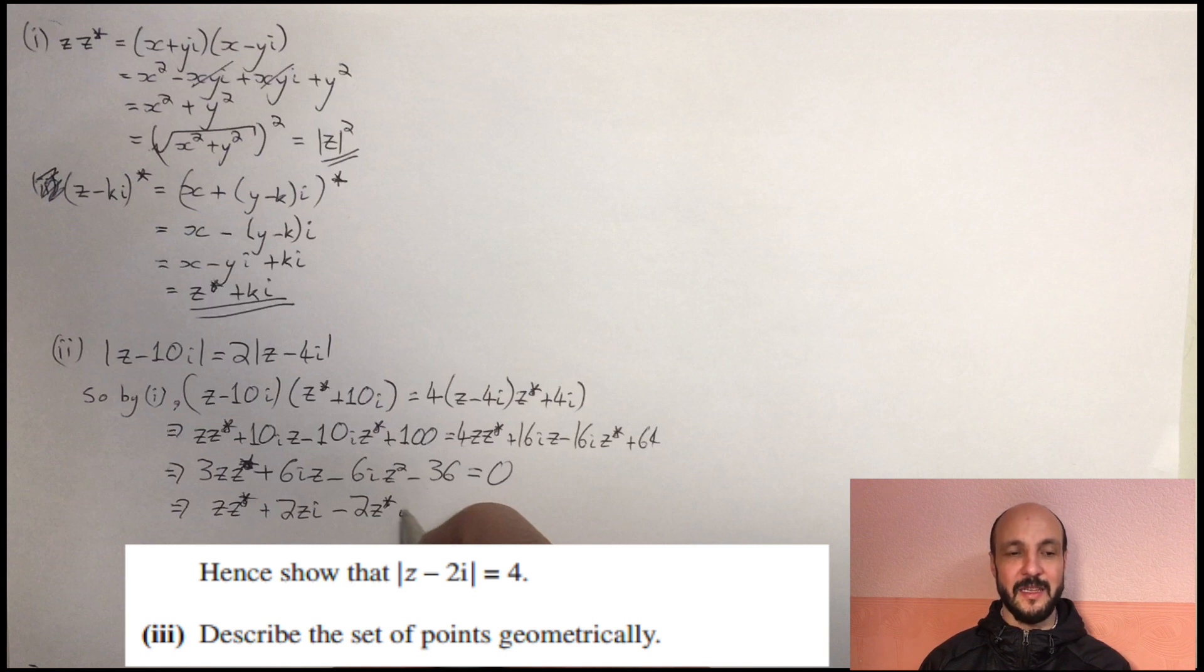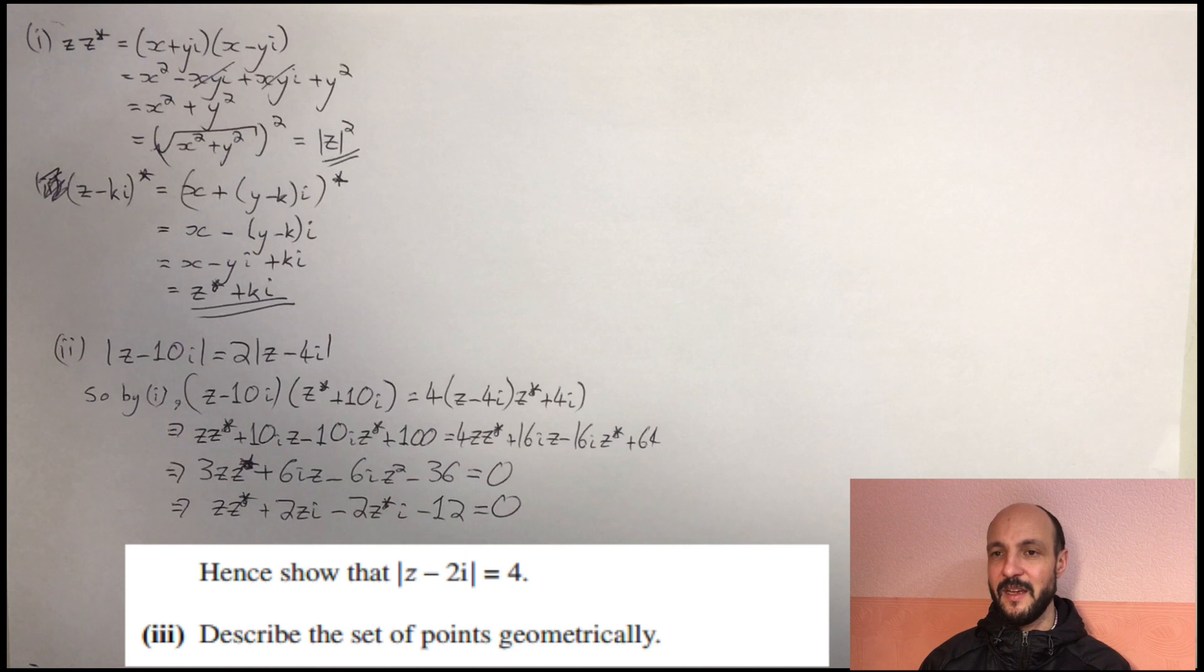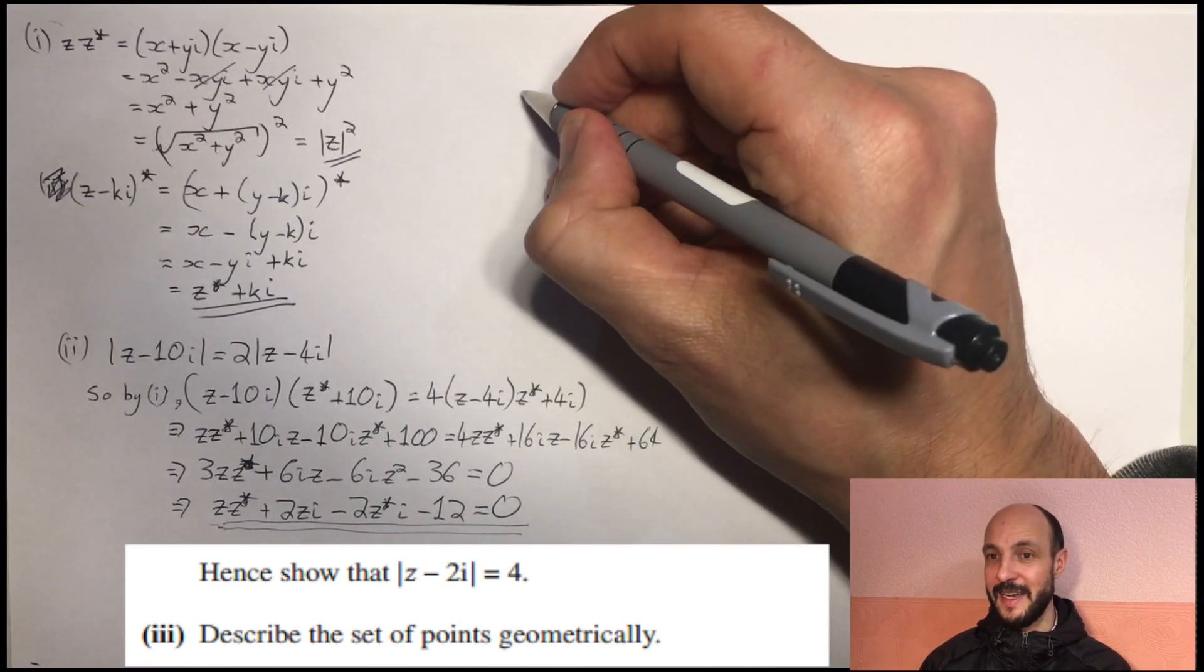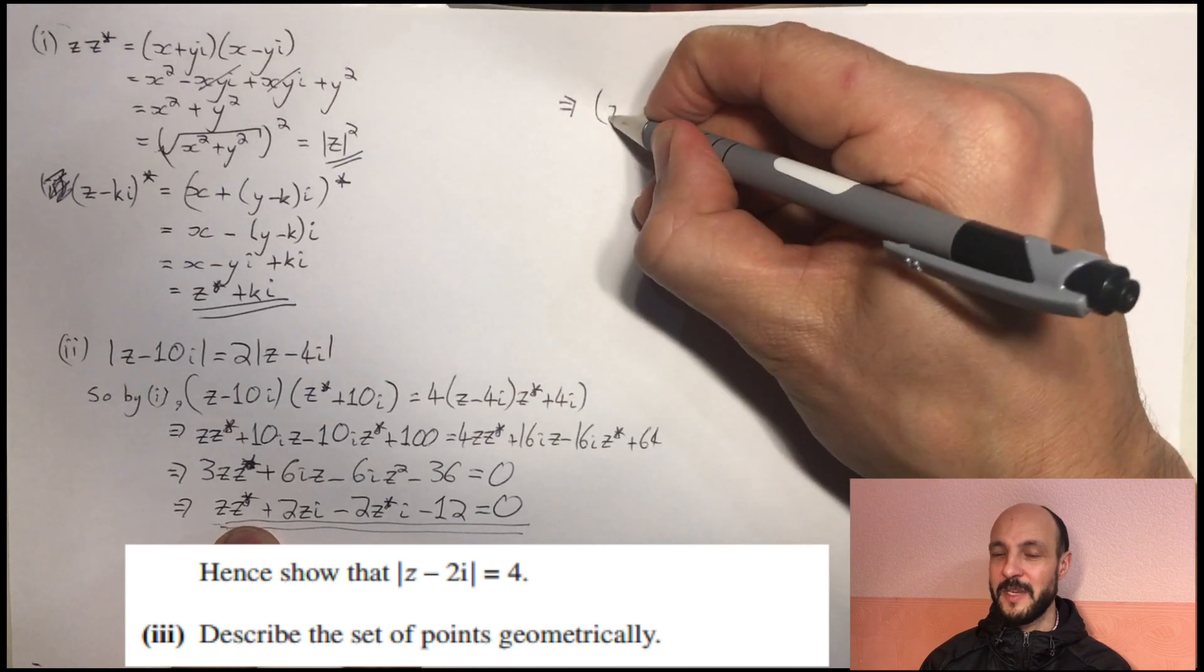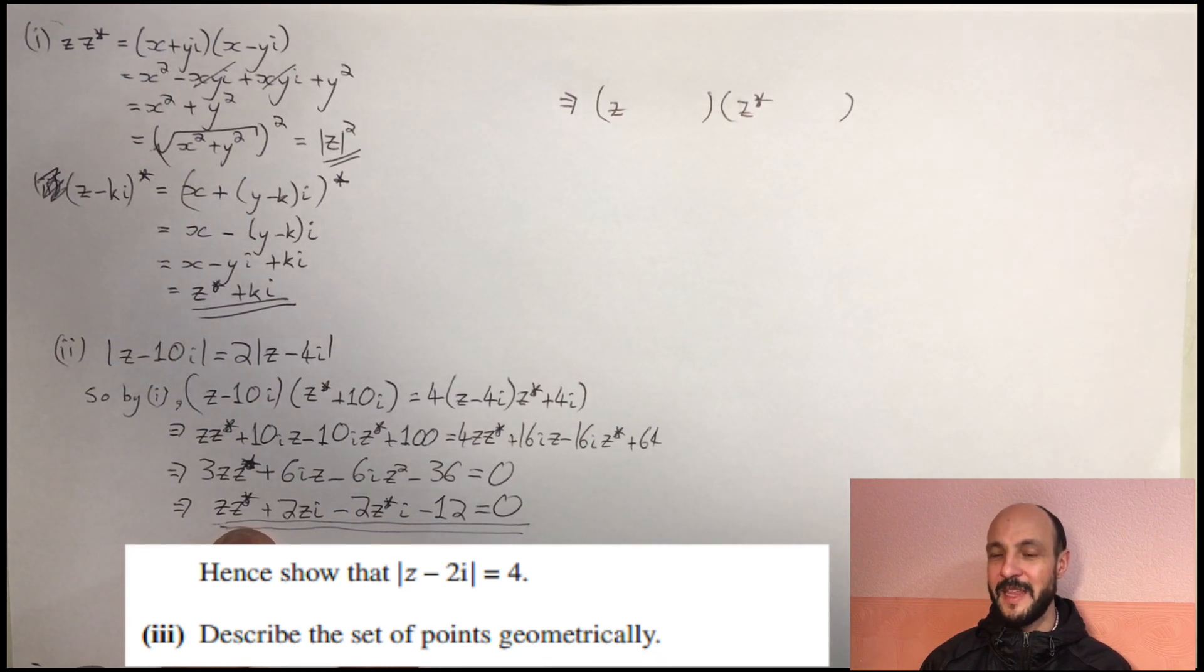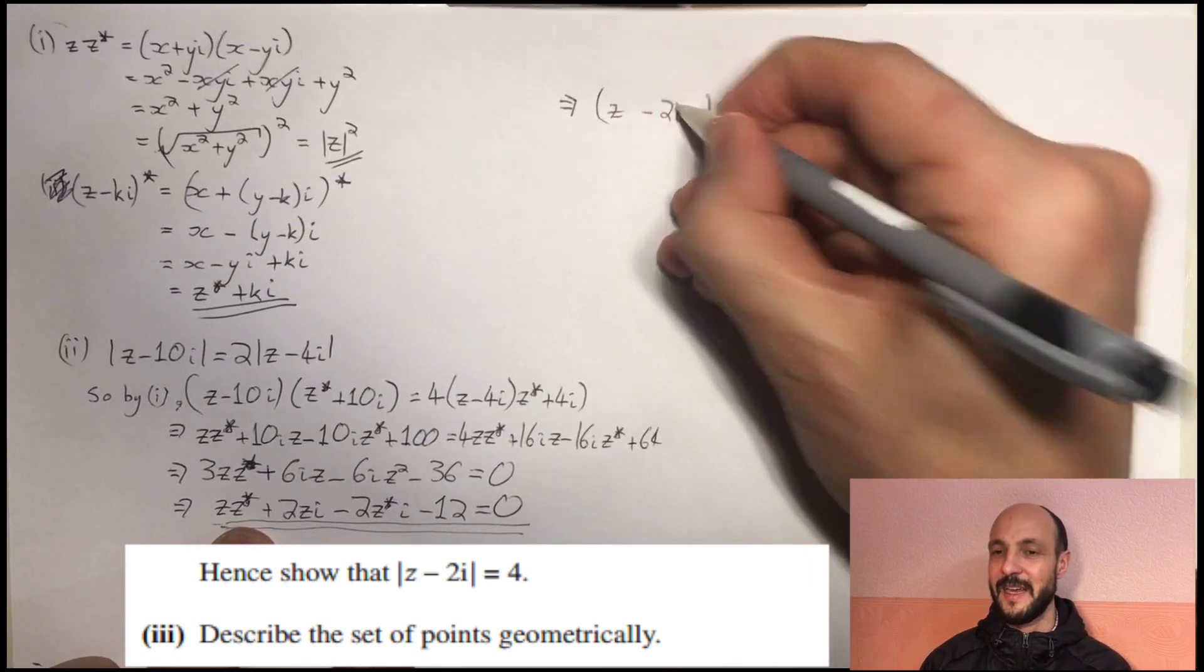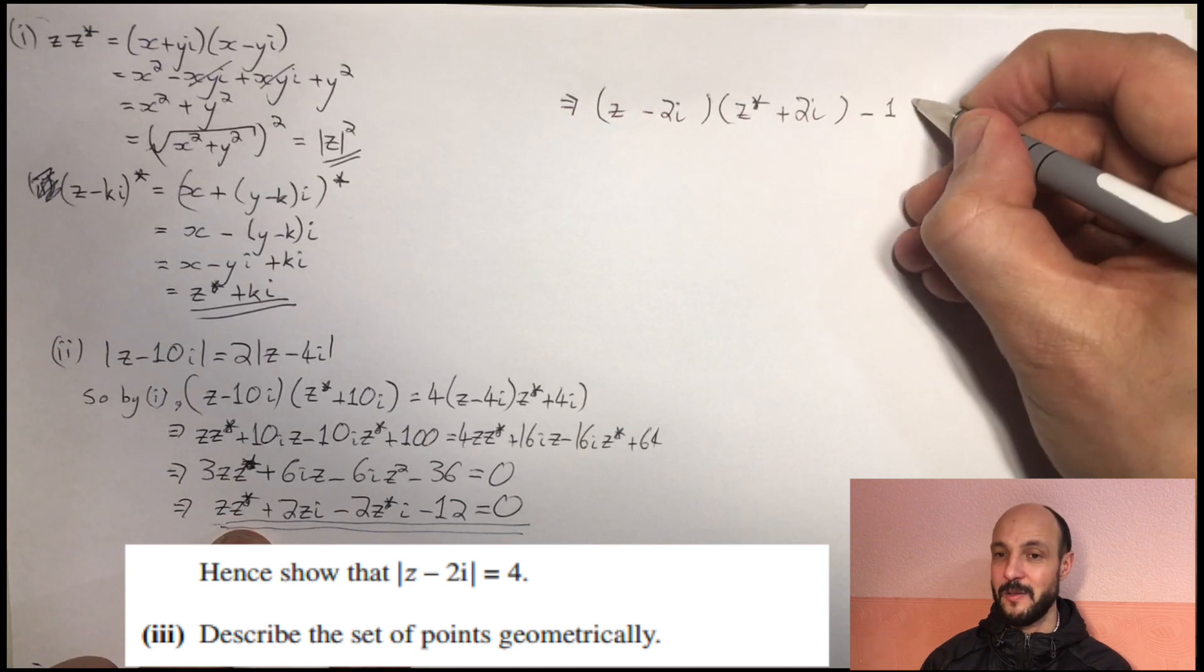And then they ask us to use this to demonstrate that the mod of z minus 2i equals 4, before we ask us to show what this is geometrically. So all we need to do at this point is we need to factorize what we've got using a completing the square approach. So clearly we're going to have, in the two brackets, our z and z star at the beginning to give us our zz star. And then if we put plus 2i, that will give us our 2zi. Then if we put minus 2i, that will give us our minus 2z star i. And all we have to do is, because the minus 2i times by the plus 2i gives us minus 4 times by minus 1, which gives us plus 4, is we then need to go ahead and subtract 4 from what's there. So we're subtracting 4, and there's already a subtract 12, so that gives us subtract 16 altogether. If we add that to both sides to push down the right-hand side, we have z minus 2i times by z star plus 2i equals 16.